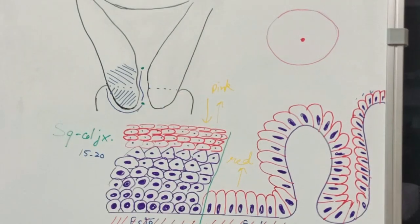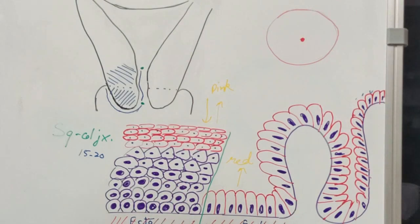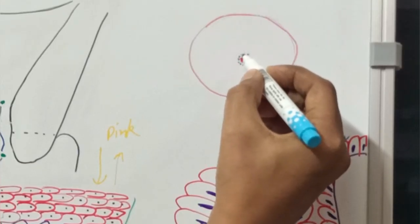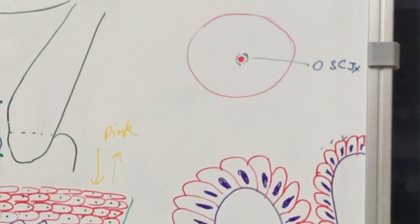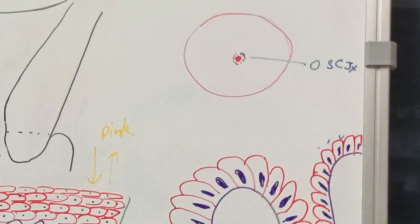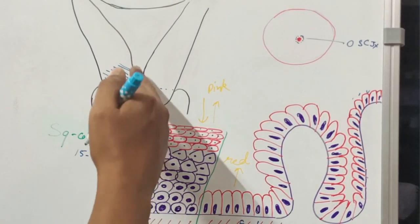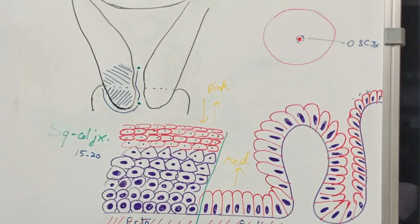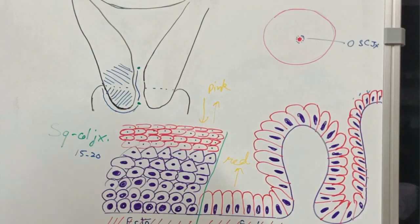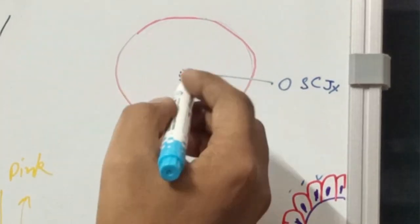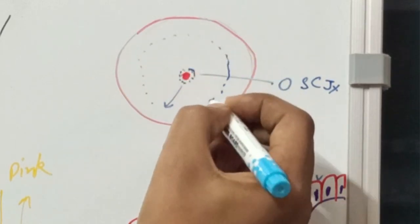Regarding the normal appearance of the cervix: in a patient before menarche, the squamocolumnar junction — the original squamocolumnar junction — is just near the external os. After menarche or in the early reproductive age, due to the effect of estrogen, there will be eversion of the endocervical lining over the ectocervix. This endocervical lining moves outwards, so the squamocolumnar junction moves outward and this becomes the new original squamocolumnar junction.